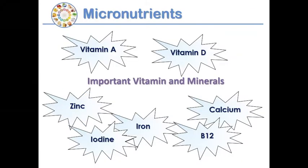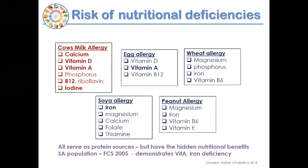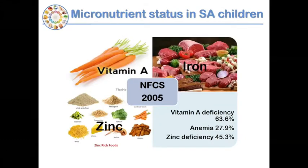Micronutrients are often forgotten. Cow's milk allergy puts children at risk for calcium, vitamin D, and vitamin A deficiencies. In South Africa there are existing concerns around vitamin A deficiency, iron-deficiency anaemia, and zinc deficiency. When identifying nutritional deficiencies, consider anaemia (haemoglobin and mean corpuscular volume), electrolytes, magnesium, calcium, iron, vitamin D, and zinc — especially when patients are not progressing.